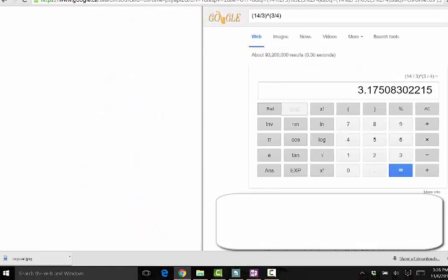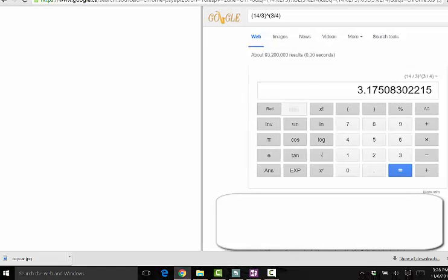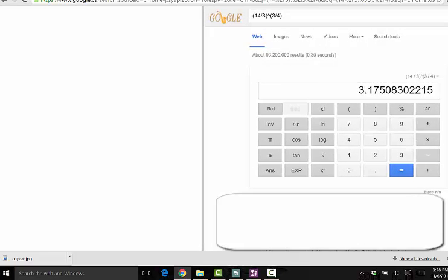Indeed, Google tells us that fourteen thirds to the three over four is three point something, it's definitely between one and eight.